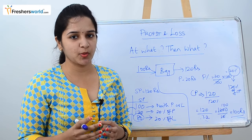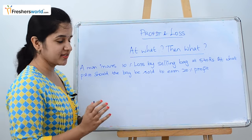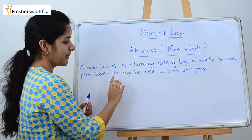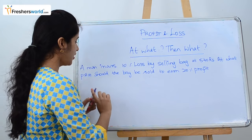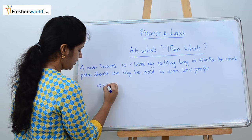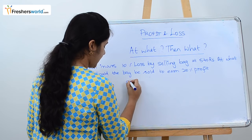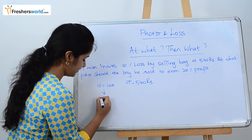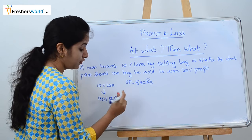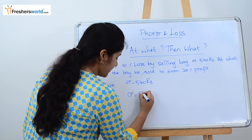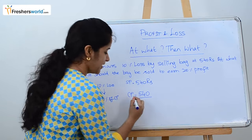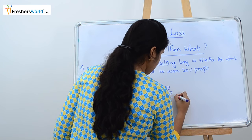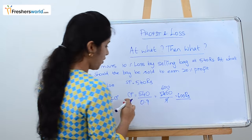Let's solve a problem: a man incurs 10 percent loss by selling a bag at 540 rupees. At what price should the bag be sold to earn 20 percent profit? First, find the cost price. A 10 percent loss means the bag was sold at 90 percent of cost price. So cost price equals 540 divided by 0.9, which is 600 rupees.